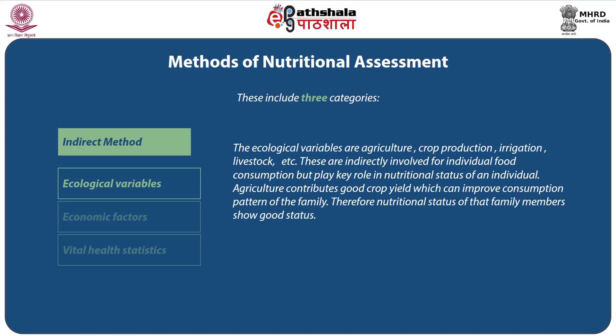Ecological variables include agriculture, crop production, irrigation, livestock, etc. These are indirectly involved in individual food consumption but play a key role in the nutritional status of an individual. Agriculture contributes to good crop yield which can improve consumption patterns of the family, and therefore the nutritional status of family members will show good status.